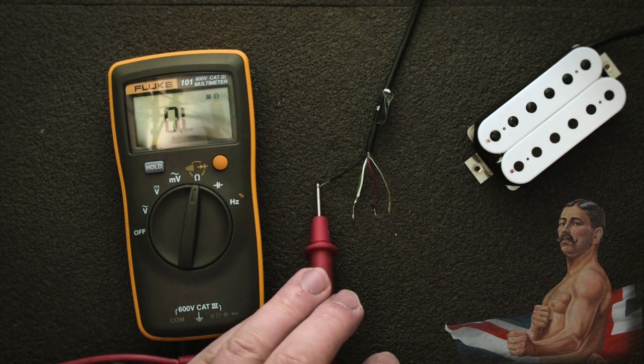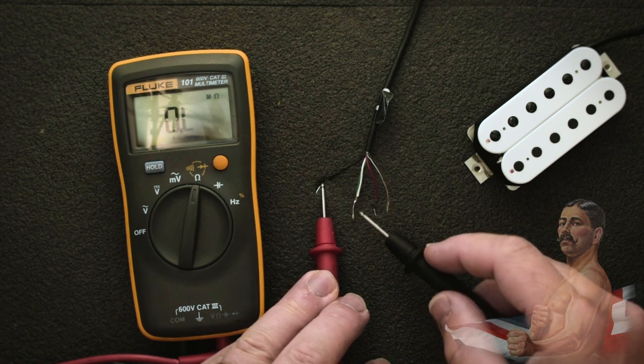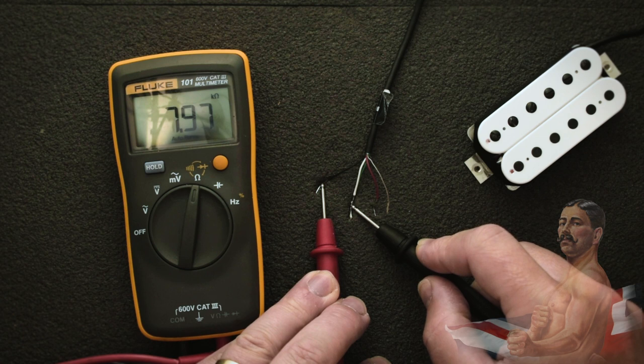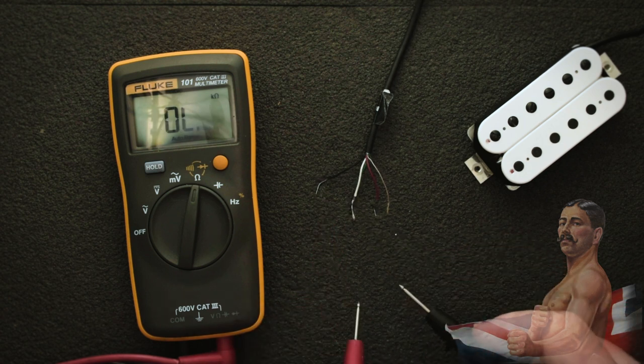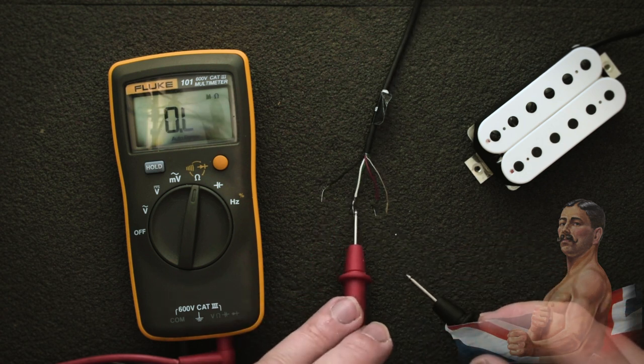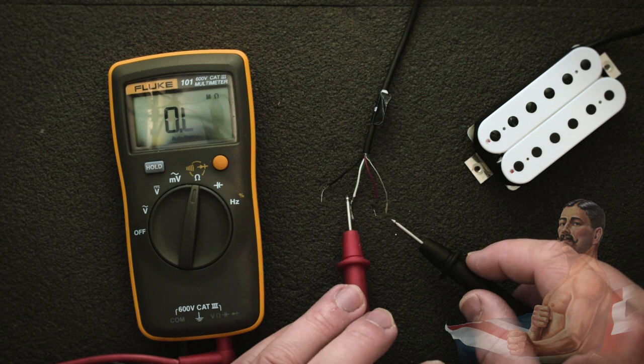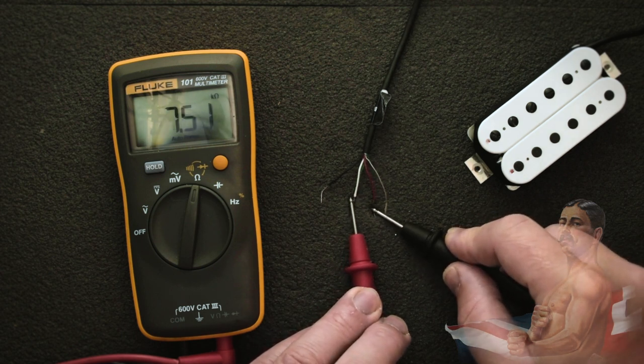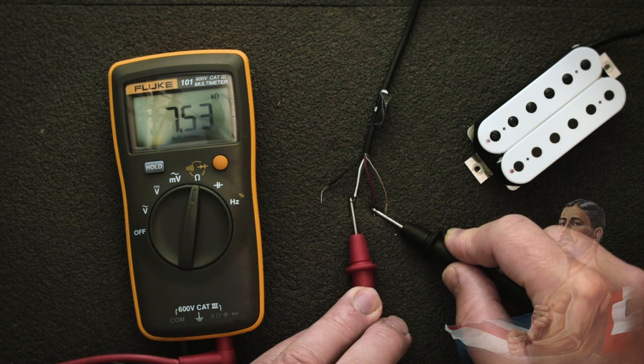To do this we can first measure between the black wire and the green and white pair. What this is actually doing is measuring between the black and white wires which measures the south coil. Here we're getting good measurement for the south coil. Then you can do exactly the same measurement for the green and white pair and the red, and this will measure the north coil. Again we're getting good readings here.